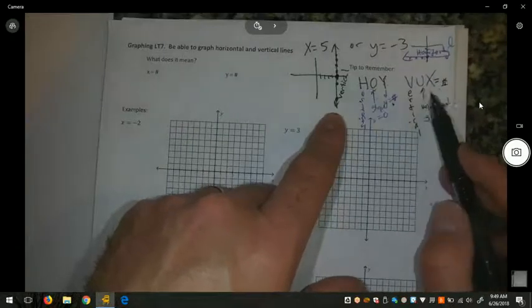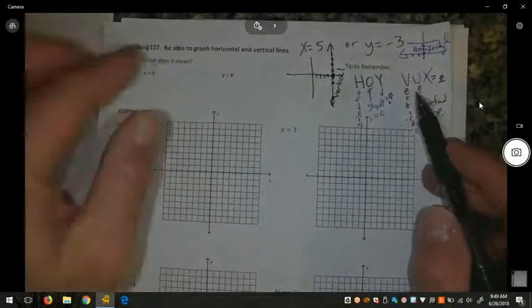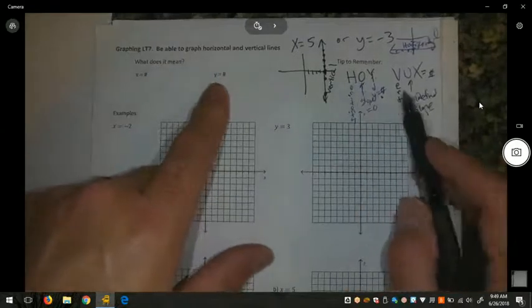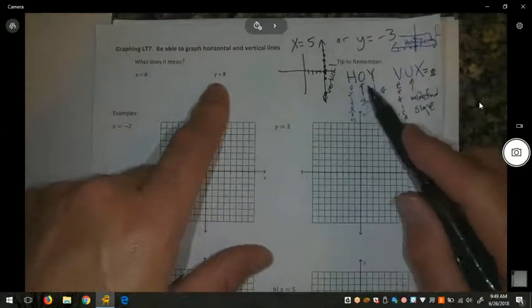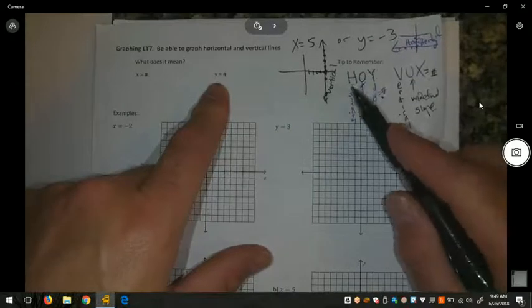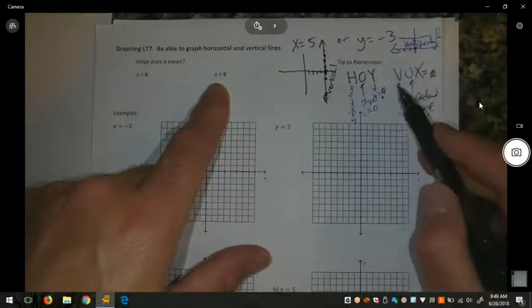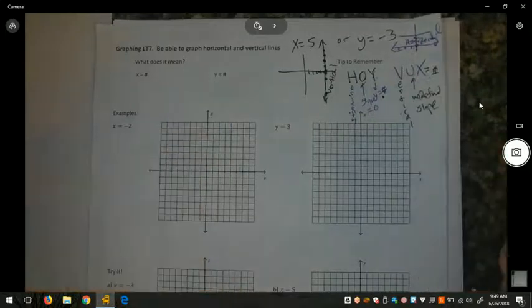So, vertical lines have x equals a number. If you remember the expression oivox, or if you say oivay when you see that x equals a number, or y equals a number, change it to oivox. H-O-Y, the y equals, should be a horizontal line when you're done graphing. The x equals should be a vertical line when you're done graphing.